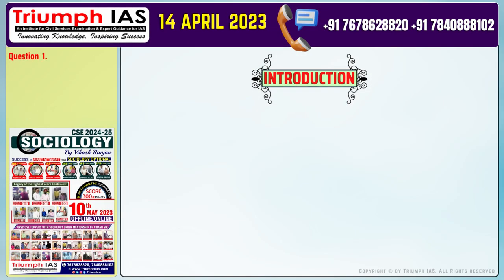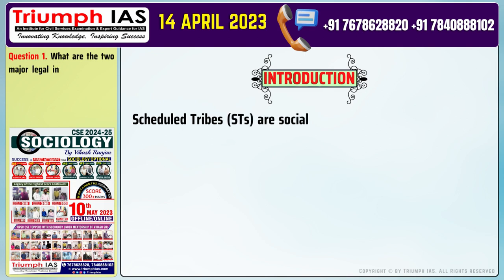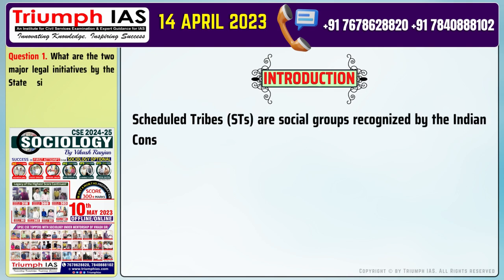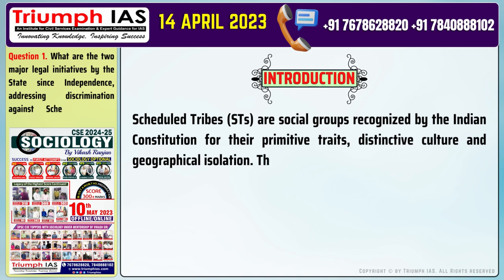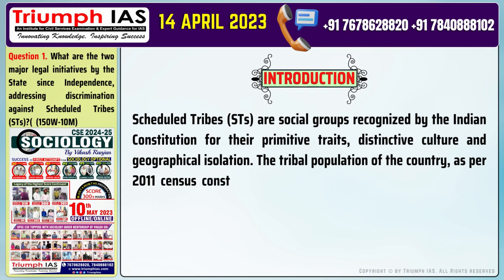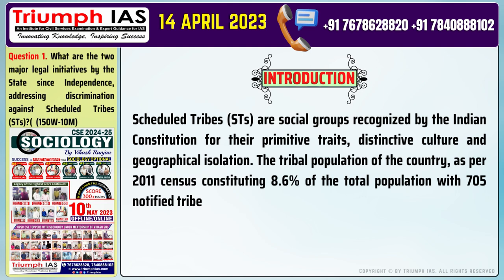Let's start with the introduction of the answer. Scheduled Tribes, STs, are social groups recognized by the Indian constitution for their primitive traits, distinctive culture, and geographical isolation. The tribal population of the country, as per the 2011 census, constitutes 8.6% of the total population with 705 notified tribes.